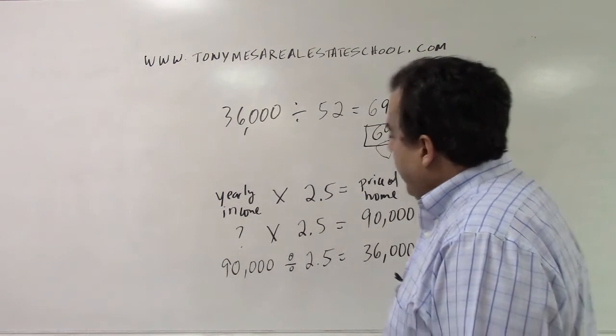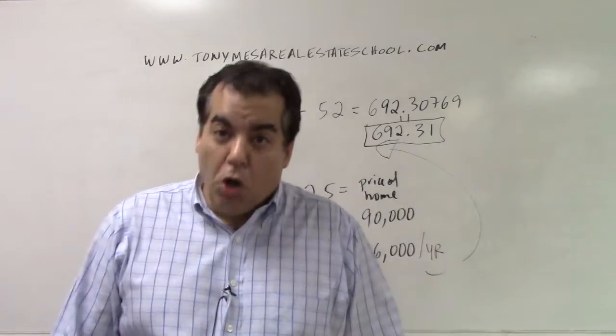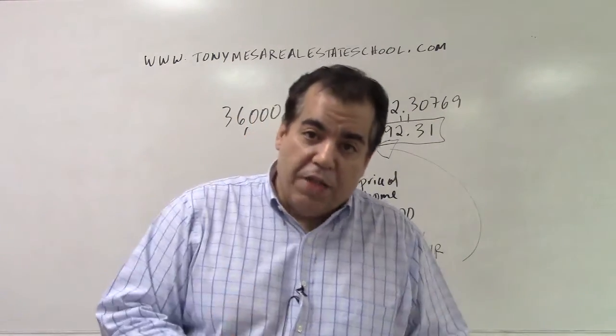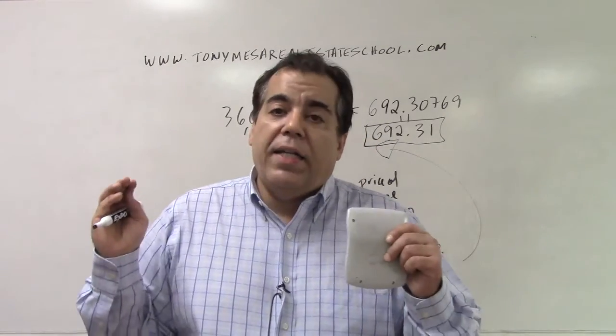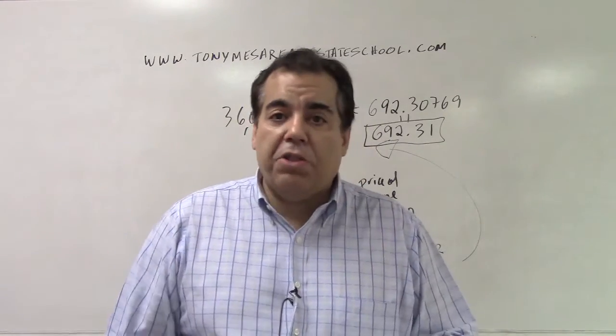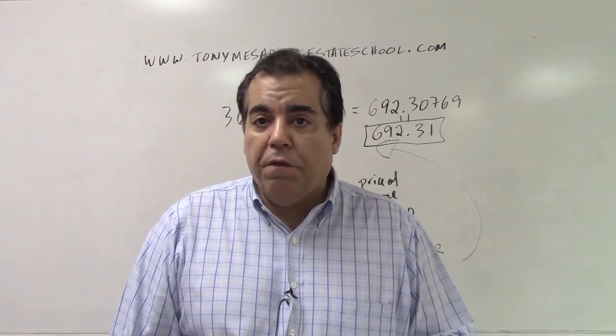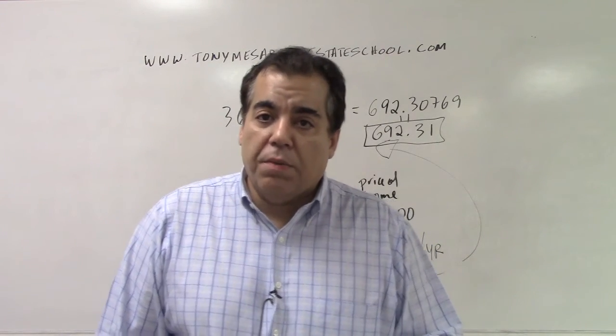That would be the income that you need to make per week in order to make the $36,000 a year, and then in order to be able to buy this house based on what the lender is telling you, they will let you buy a house that is 2.5 times what you make per year.